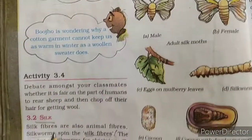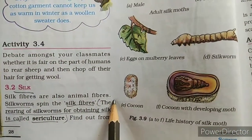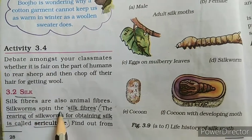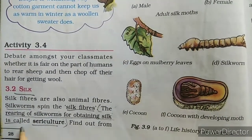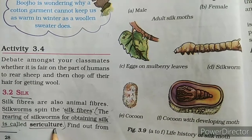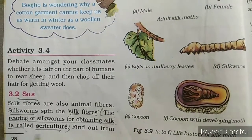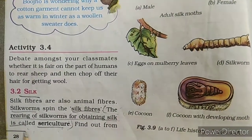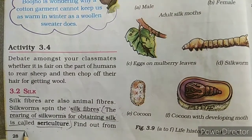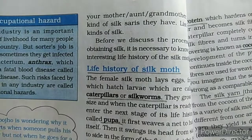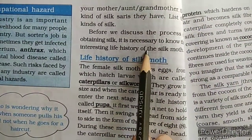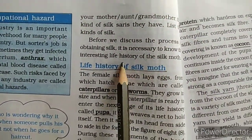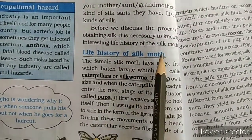Silk fibers are also animal fibers. Silkworms spin the silk fibers. The rearing of silkworms for obtaining silk is called sericulture. Before we discuss the process of obtaining silk, it is necessary to know the interesting life history of the silk moth.